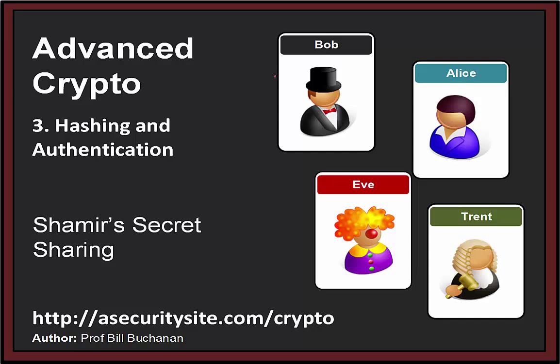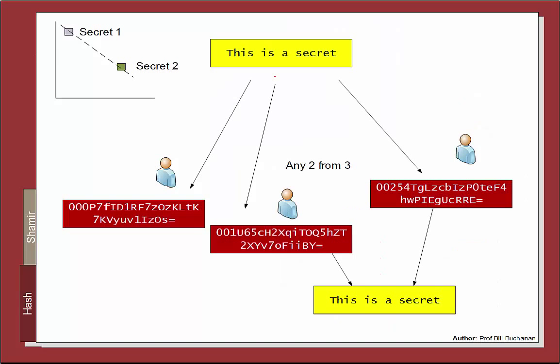The very last technique is Shamir's Secret Sharing. With Shamir's Secret Sharing we have a secret — such as the equation of a straight line — and we can share the secret by having two points on the line. Only by knowing these two points can you determine what the secret is. Shamir allows you to take data, split it into shares, and define how many shares need to come together to produce the original data. This is a two-from-three share, where any two of the three shares can come together to produce the data back again.